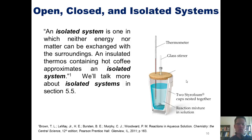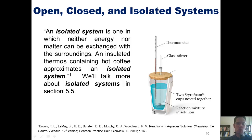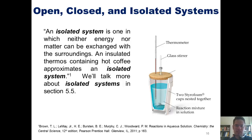An isolated system is one in which neither energy nor matter can exchange with the surroundings. An insulated thermos containing hot coffee approximates an isolated system. If a chemical process occurs in a container that cannot absorb or transfer heat or exchange any matter, we call it an isolated system. A styrofoam coffee cup approximates an isolated system because styrofoam does not transfer heat as readily as metal, though it still transfers some heat, so it isn't perfectly isolated. We will discuss isolated systems more in section 5.5.